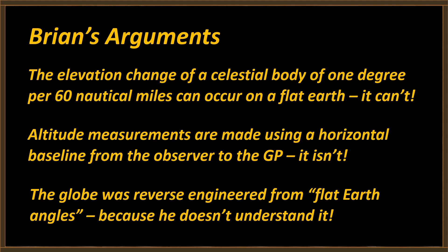He's going to tell us that altitude measurements are made using a horizontal baseline that goes all the way from the observer to the GP of the celestial body we're looking at. The GP is the point directly underneath the celestial body — that could be thousands of miles away from you. Despite the fact that every book ever written about sextants, how they work and how they're used, says something other than that, Brian is absolutely certain this horizontal baseline must exist.